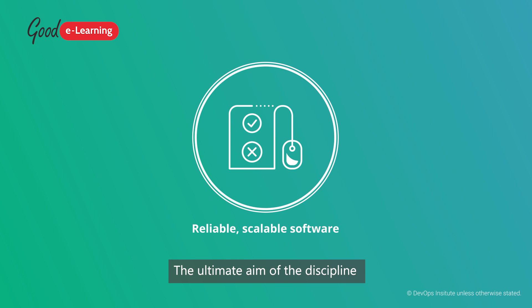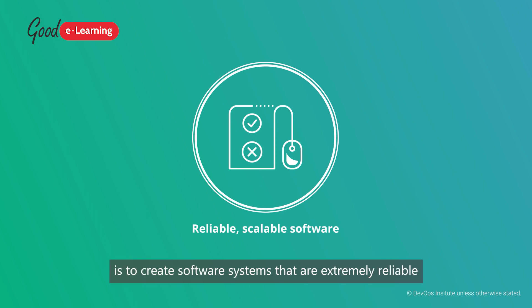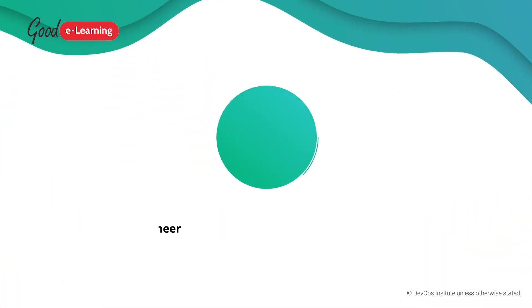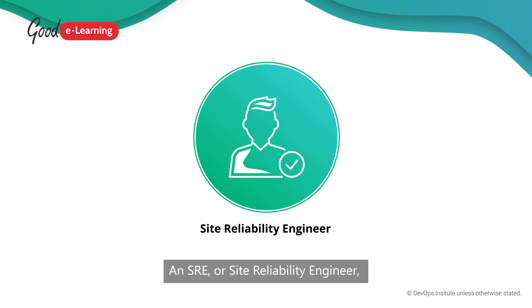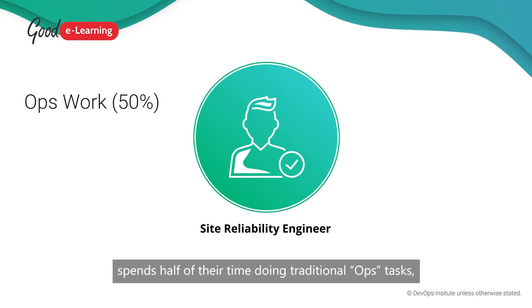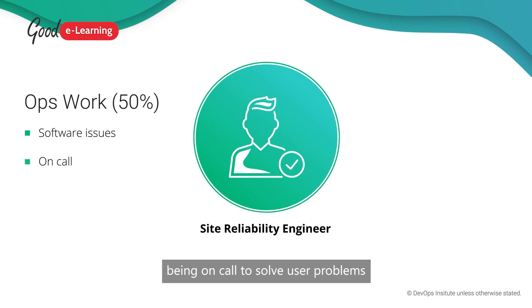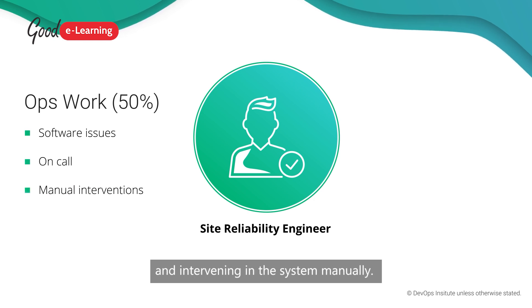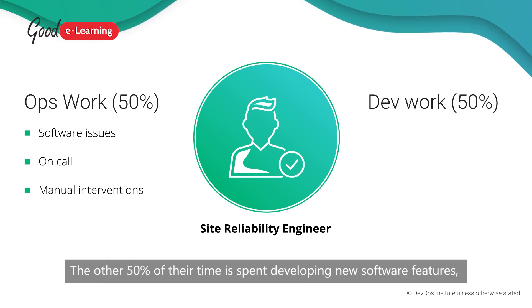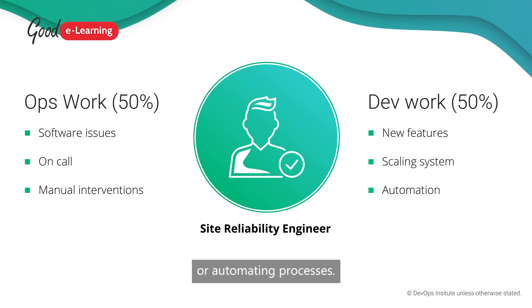The ultimate aim of the discipline is to create software systems that are extremely reliable and can be scaled or increased in size easily. An SRE or site reliability engineer spends half of their time doing traditional ops tasks, such as resolving issues with the software, being on call to solve user problems and intervening in the system manually. The other 50% of their time is spent developing new software features, scaling the system or automating processes.